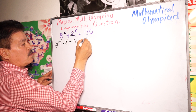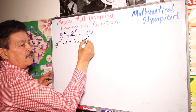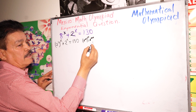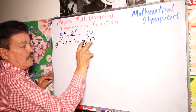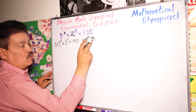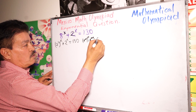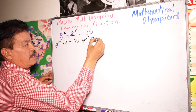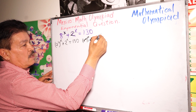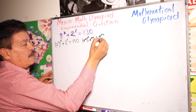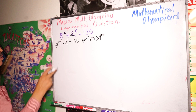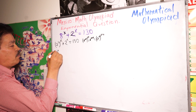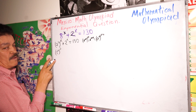We know this rule: A to the M power to the N power equals A to the M times N. You are able to switch these two. So applying this rule, we're going to have here 2 to the X power to the third power.